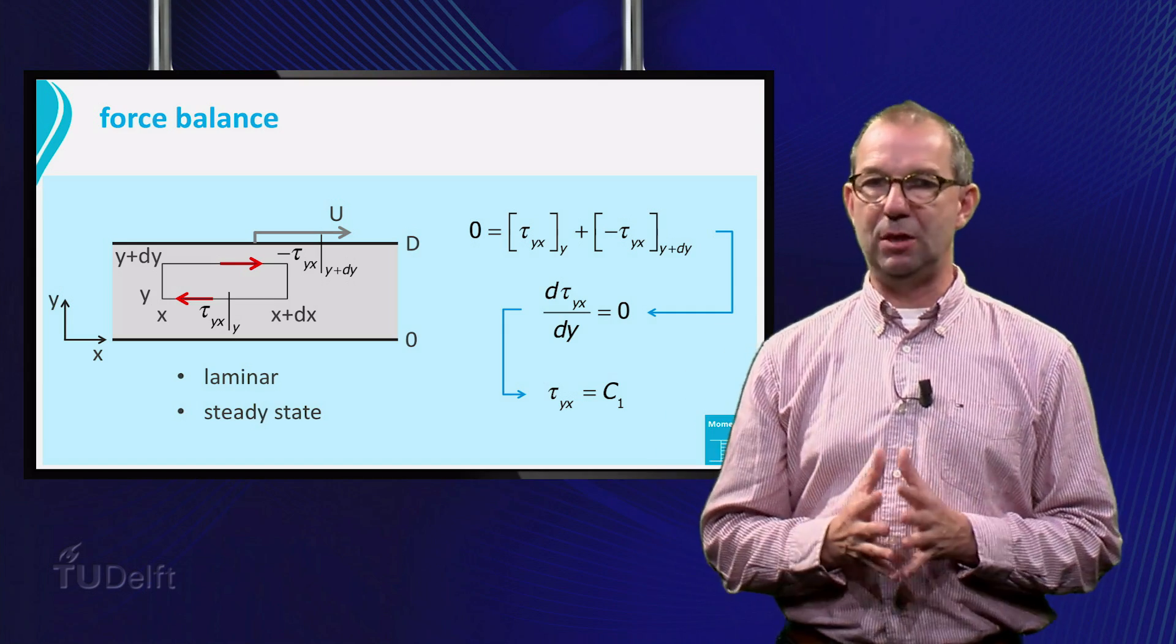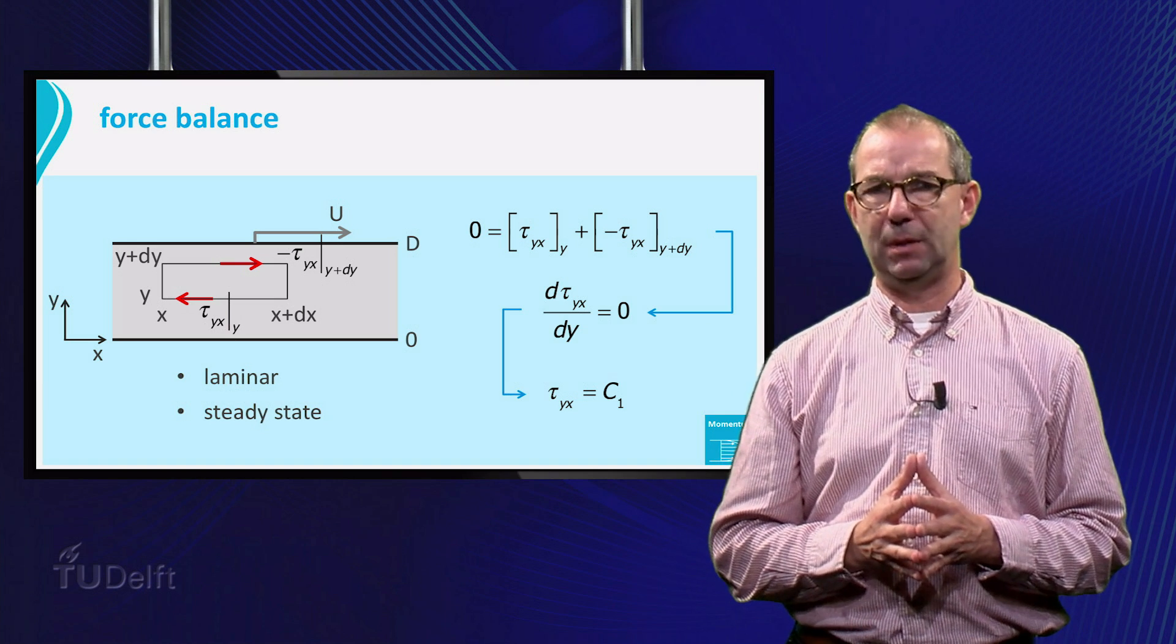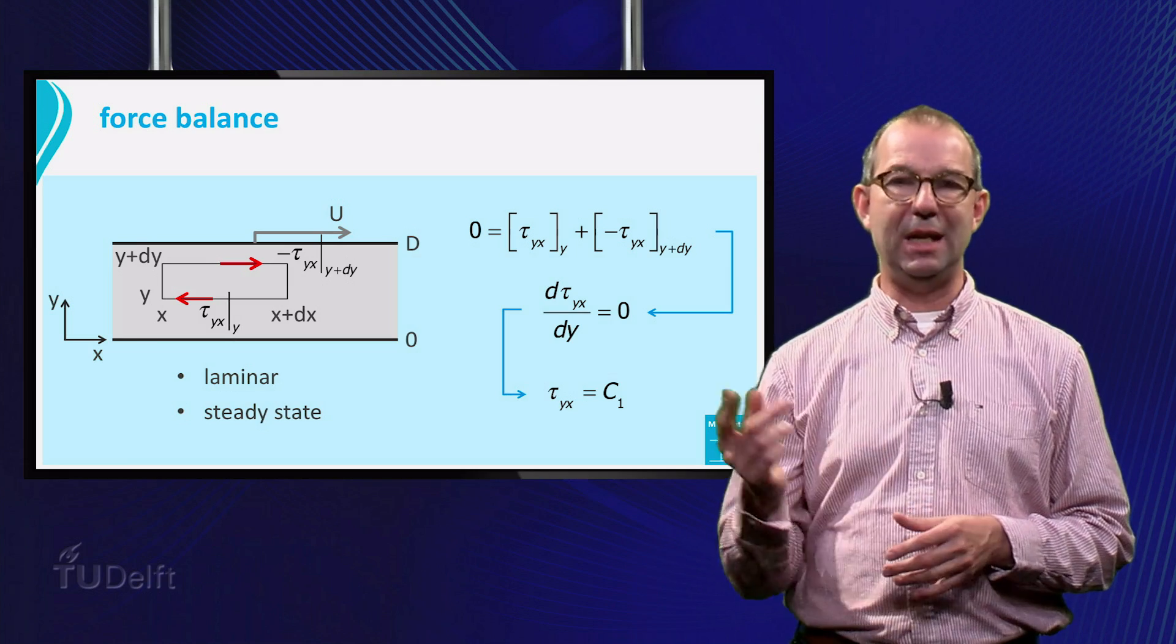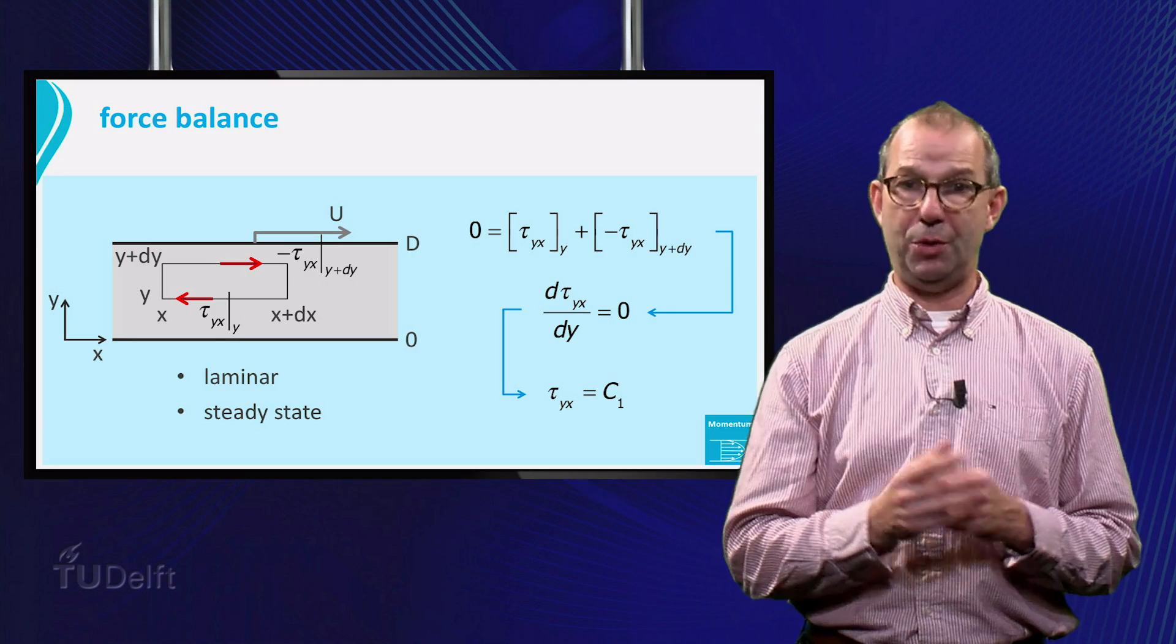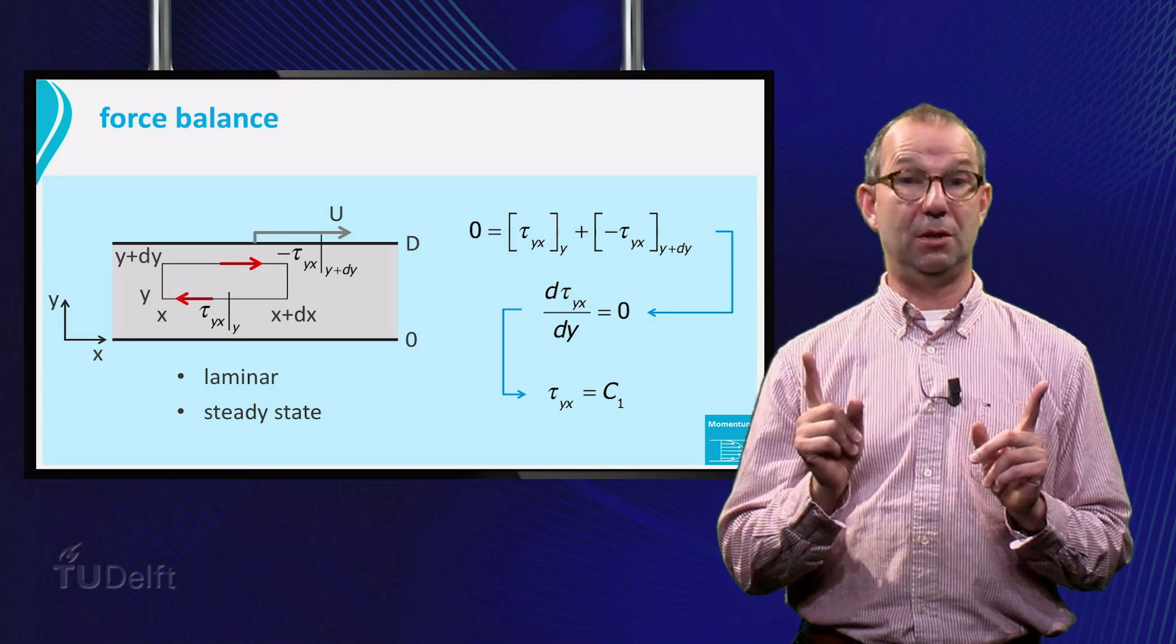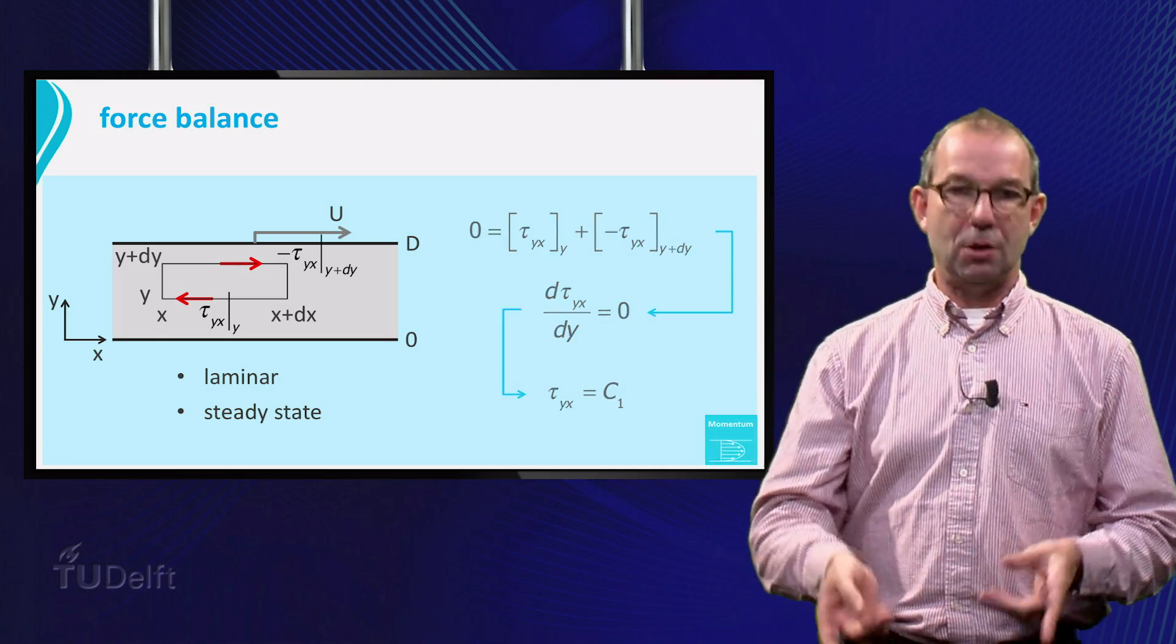Note that we can make an analogy with conduction of heat through a slab. We have now the equivalent of the heat flux through the slab is constant. Also there we had no boundary conditions for the heat flux and proceeded with the temperature distribution.